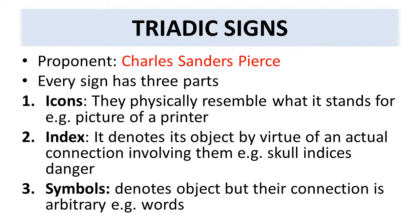An index has no direct physical representation of what it stands for in the outside world. Rather, it denotes its object by virtue of an actual connection involving them. For example, the image of a skull — the skull indexes danger. There is no actual skull or danger present; rather, the skull represents something else, and that is danger.